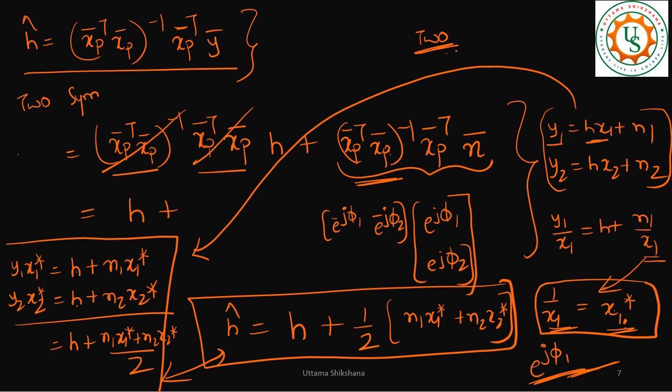This is how, in a practical system, we can implement channel estimation. There are two steps: first, perform the inverse operation with the transmitted pilot symbols; second, take the averaging. We will see more about this in upcoming videos related to 4G or 5G channel estimation algorithms.